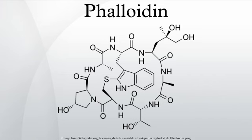Phalloidin functions by binding and stabilizing filamentous actin, effectively preventing the depolymerization of actin fibers. Due to its tight and selective binding to F-actin, derivatives of phalloidin containing fluorescent tags are used widely in microscopy to visualize F-actin in biomedical research.